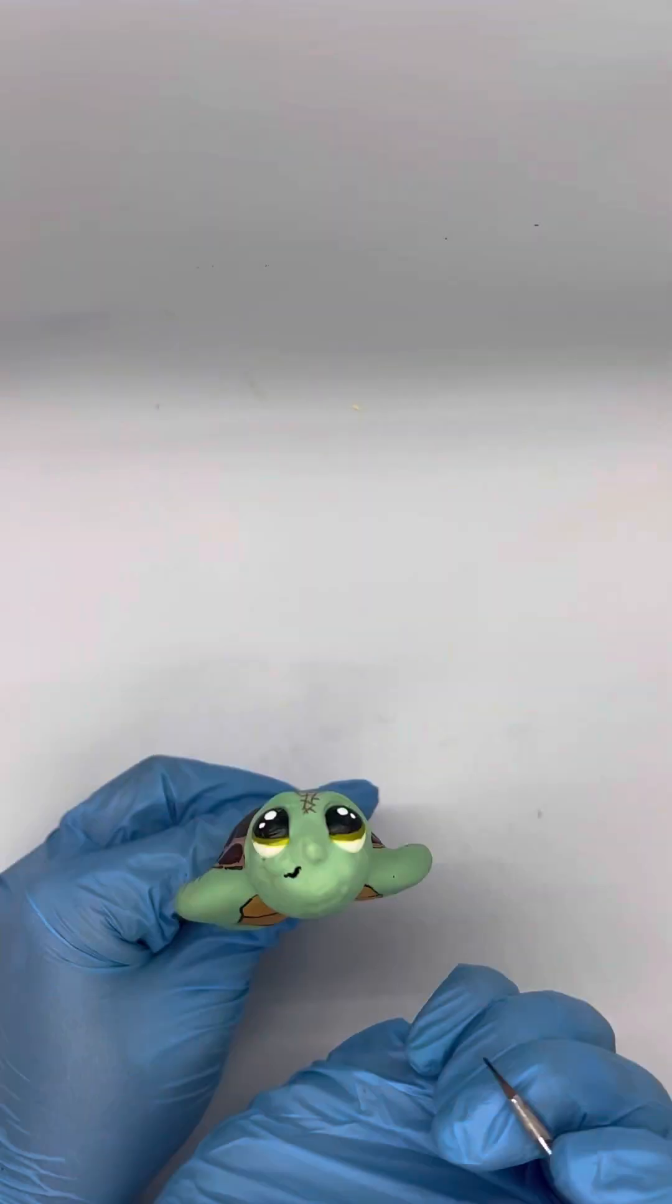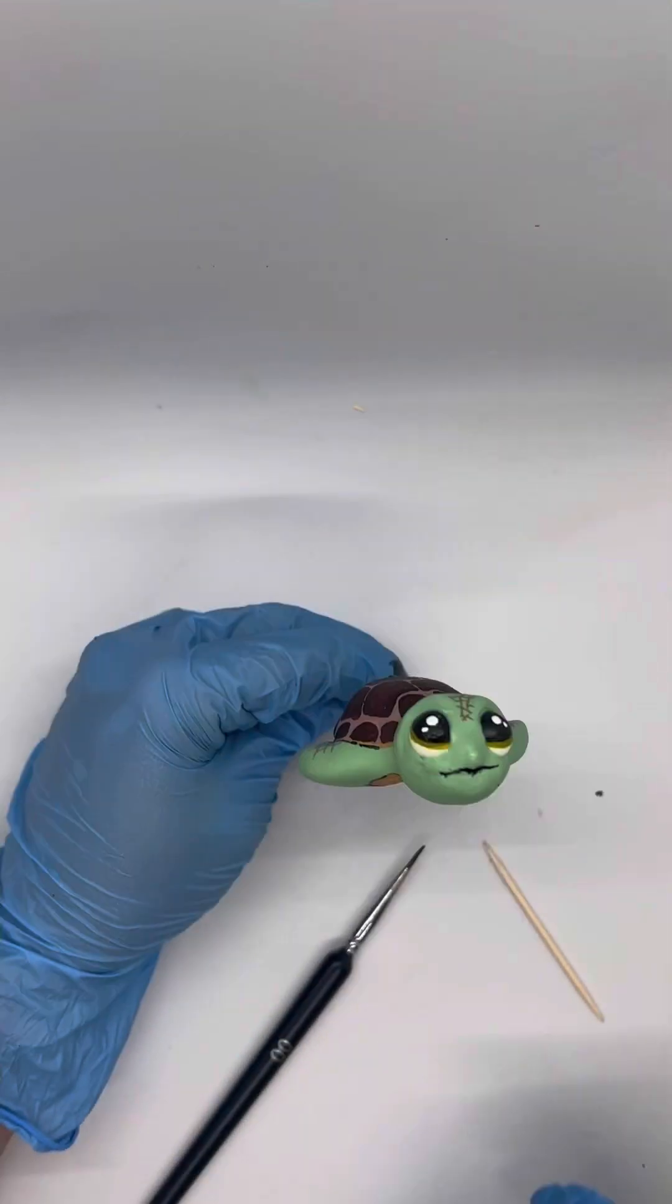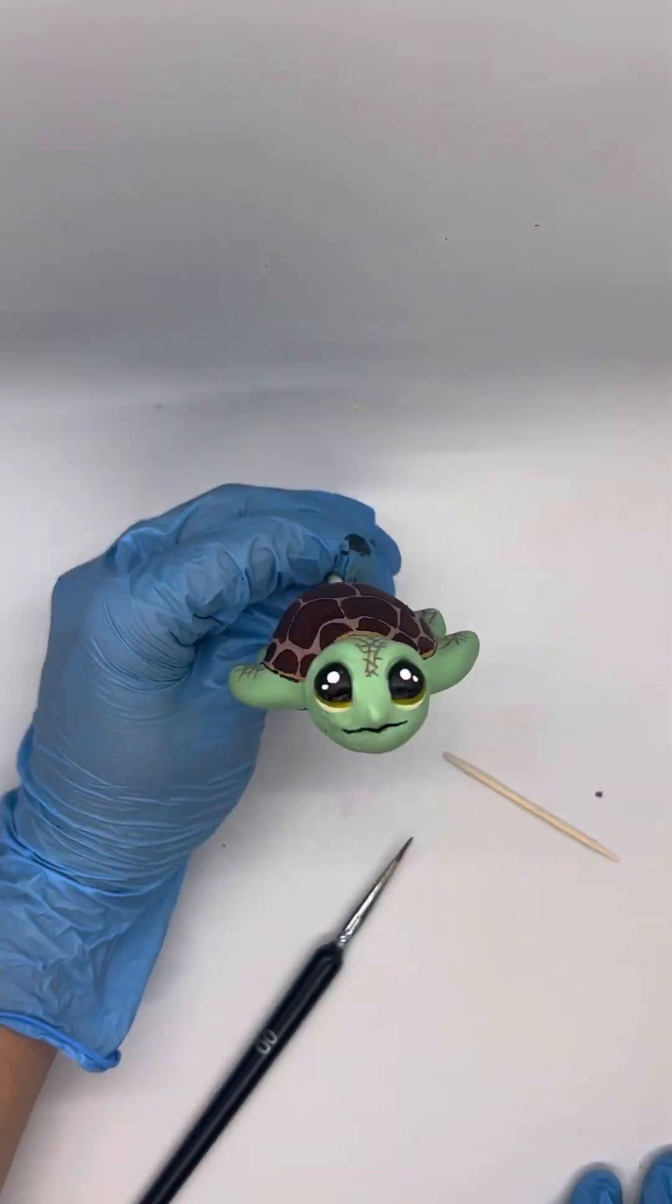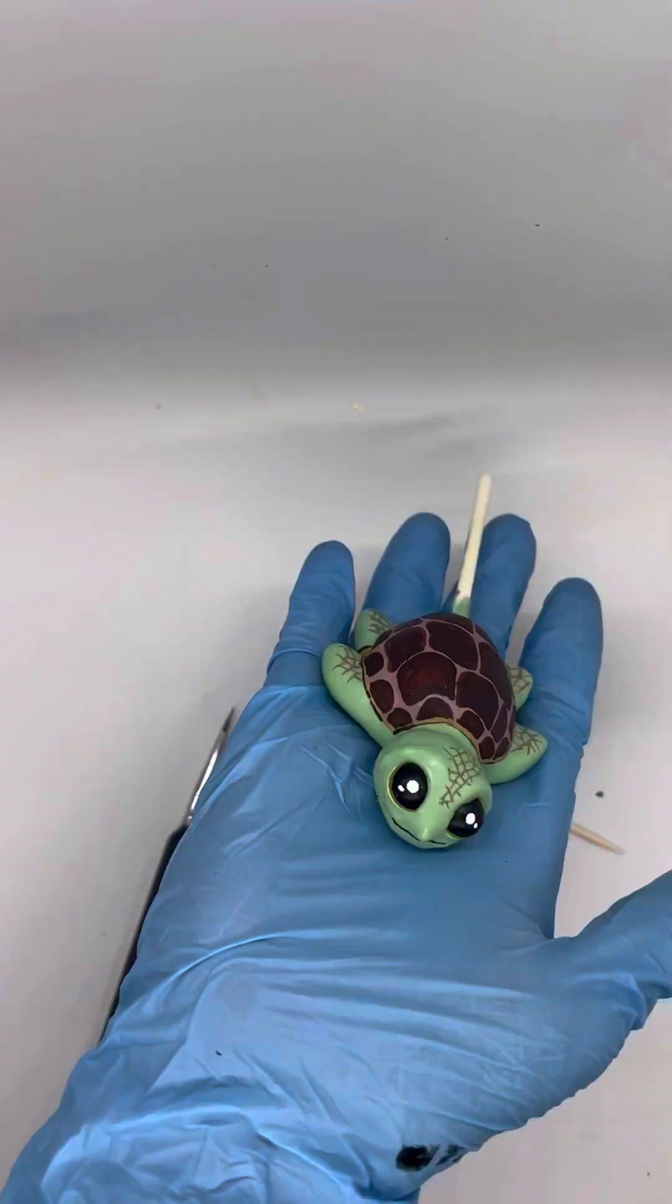For our last step, we just have to make the mouth. You just paint a thin line following along that little nose point. There's your cute little baby turtle in 7,000 easy steps. Thanks so much for watching.